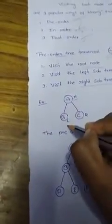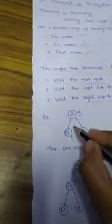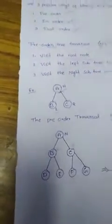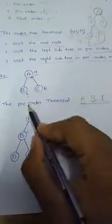Let us see this example with three nodes A, B, C. A is the root node, B is the left child of root A, and C is the right child of root A. In pre-order traversal: first, we visit the root node A. Next, the left child is B, so we write B. Since B has no child nodes, we then process the right child, that is C. So the pre-order traversal for this binary tree is A, B, C.